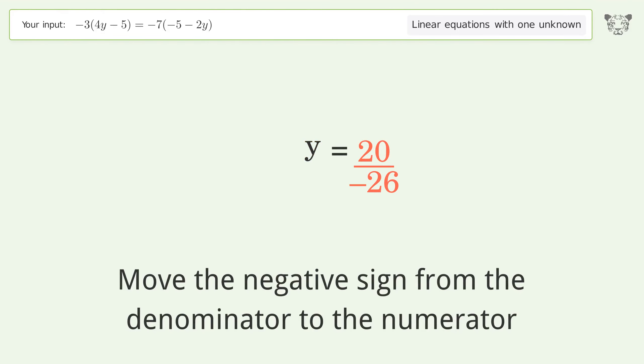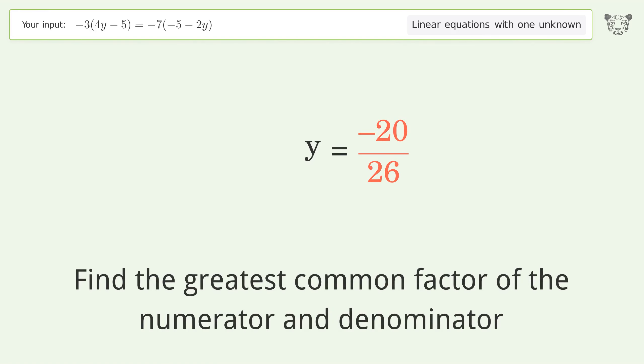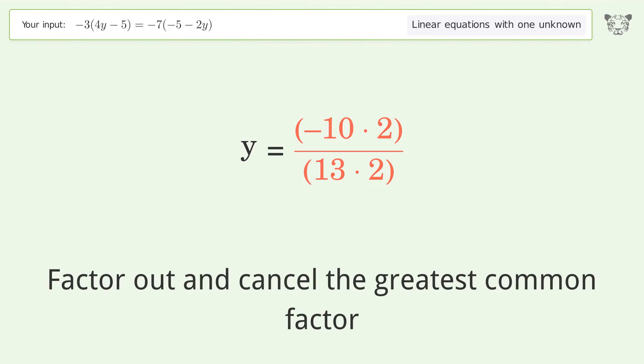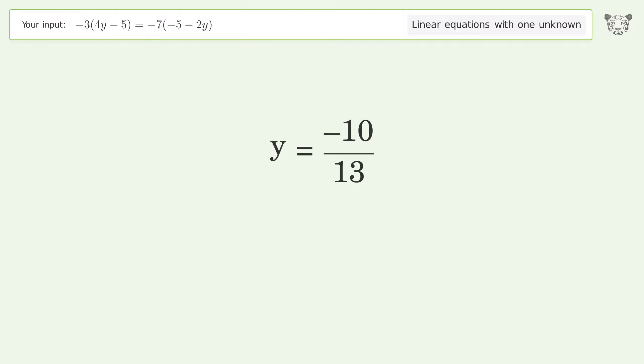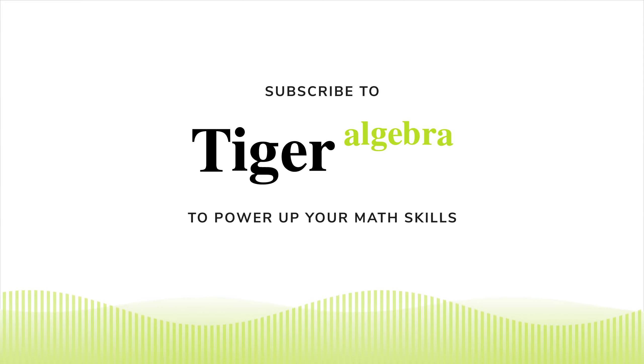Move the negative sign from the denominator to the numerator. Find the greatest common factor of the numerator and denominator. Factor out and cancel the greatest common factor. And so the final result is y equals negative 10 over 13.